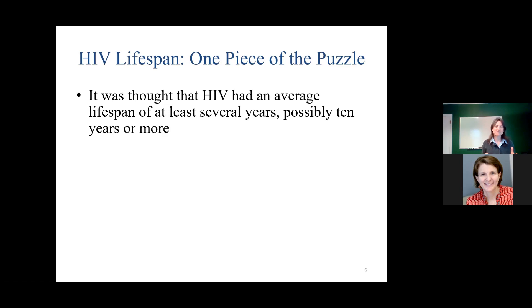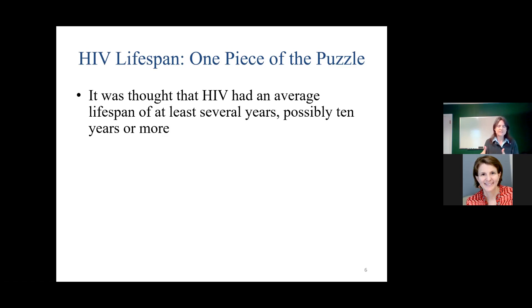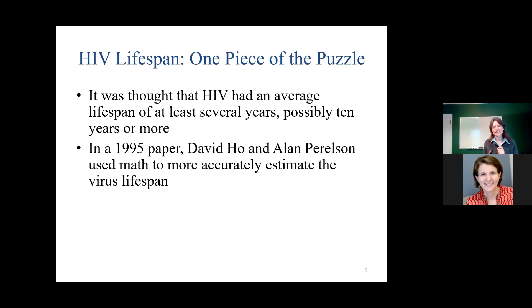It has to infect an organism in order to reproduce, so we don't actually call it a living organism. But I'm going to talk as if it is: if there is viable virus — able to continue, get into a host cell, and reproduce — I'll say it's a viable virus particle, a viable virion. The lifespan is the piece of the puzzle I want to focus on. In 1995, David Ho and Alan Perelson used mathematics to get a very accurate estimate of the lifespan.